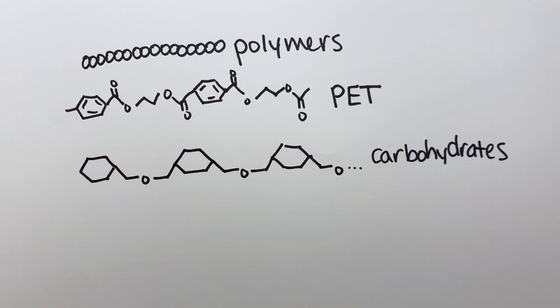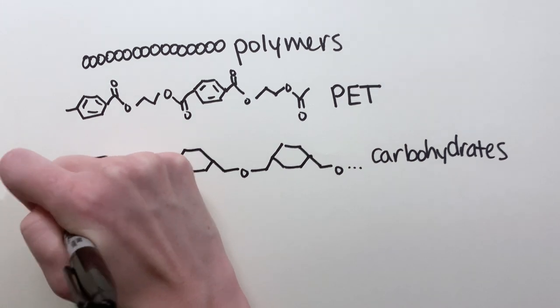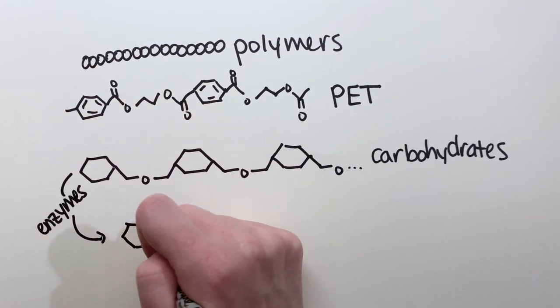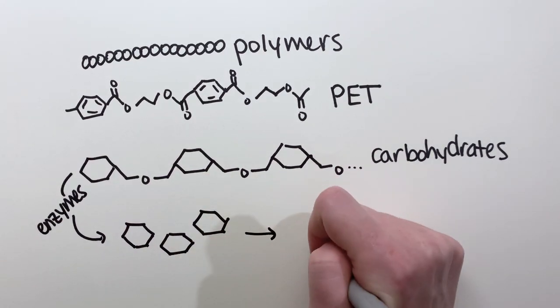Bacteria, fungi, and animals all make enzymes, tools to break down natural polymers into their building blocks, which are then used for energy.